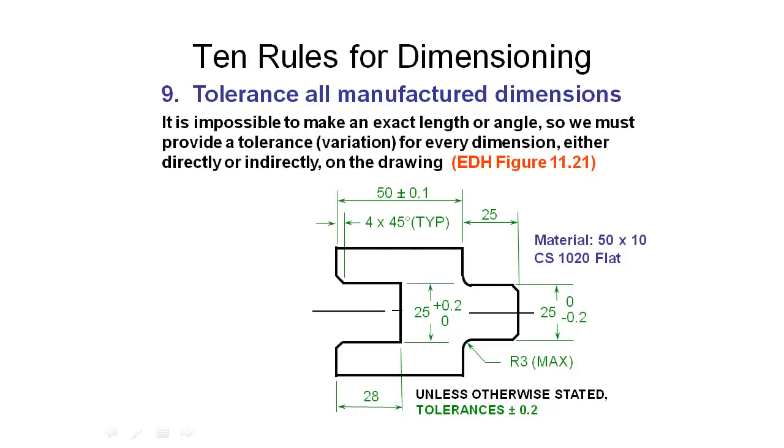Rule number nine is, and this is an important one, is that all of our dimensions that we put in our drawings, they must all have tolerances. It's actually impossible for us to manufacture a part to an exact dimension. So everything, every number that we have on there has to have some measure of accuracy or error that we're allowed in the manufacturing phase. So let's have a look at some of the examples that we've got on this part here.